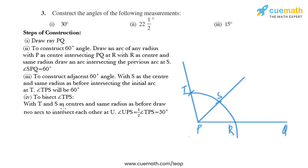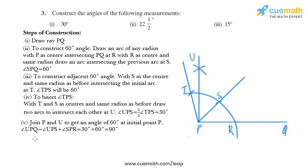Now we need to bisect angle TPS. With T and S as centers and the same radius, draw two arcs intersecting each other at U. We get angle UPS equal to half of angle TPS, which equals 30 degrees. We put the compass at T, draw an arc, then place the compass at S and draw another arc intersecting it, naming the intersection U, then join U and P.